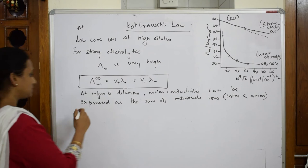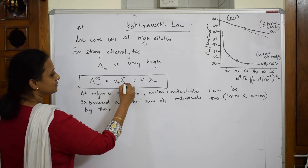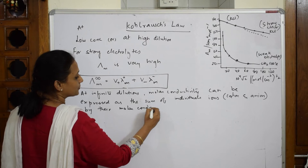So λm∞ equals ν⁺λm⁺ plus ν⁻λm⁻, multiplied by their respective molar conductivities. This is called Kohlrausch's Law. Whenever you are reaching infinite dilution, the whole conductivity — if you have to calculate it — you pick up the individual cation and individual anion multiplied by their molar conductivity.